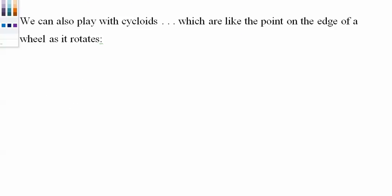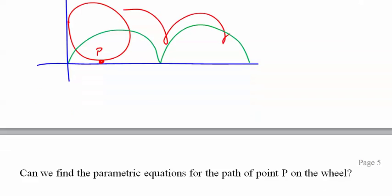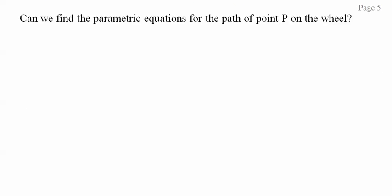A cycloid is like saying you've got a wheel here, and we have point P. And as this wheel rolls, the path at point P follows. And if you look at it, it'll look something like this. If you've ever been on one of those octopus rides, this is what it feels like as it gets to a corner—it stops and rapidly changes directions.